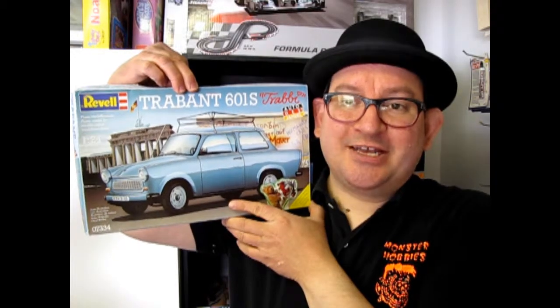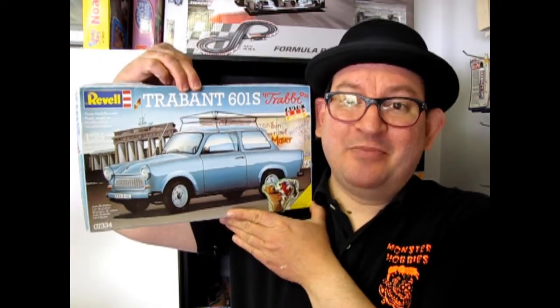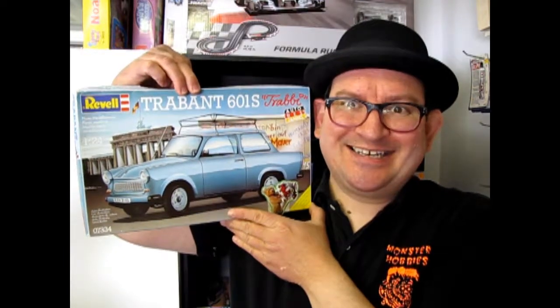The Trabant 601S by Revell Germany. Coming up next on What's in the Box?